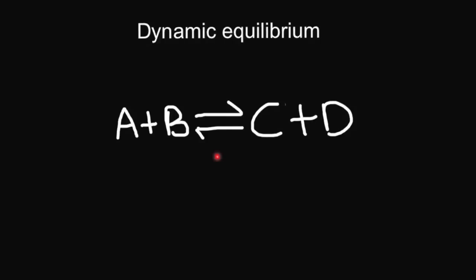Now, this doesn't have to be bang in the middle. It doesn't mean that this is going to be 50% of A and B and 50% C and D. It could be something like 90% of C and D and only 10% of A and B. The point about it being at equilibrium is that once it reaches whatever concentration of A and B and C and D, once it reaches the equilibrium point, these concentrations no longer change.